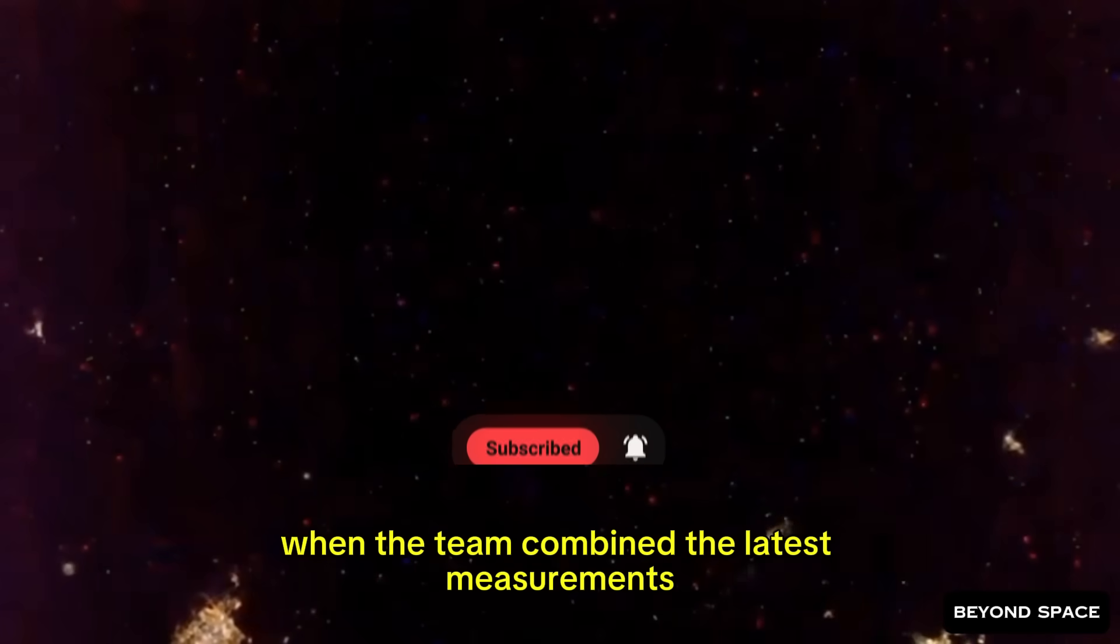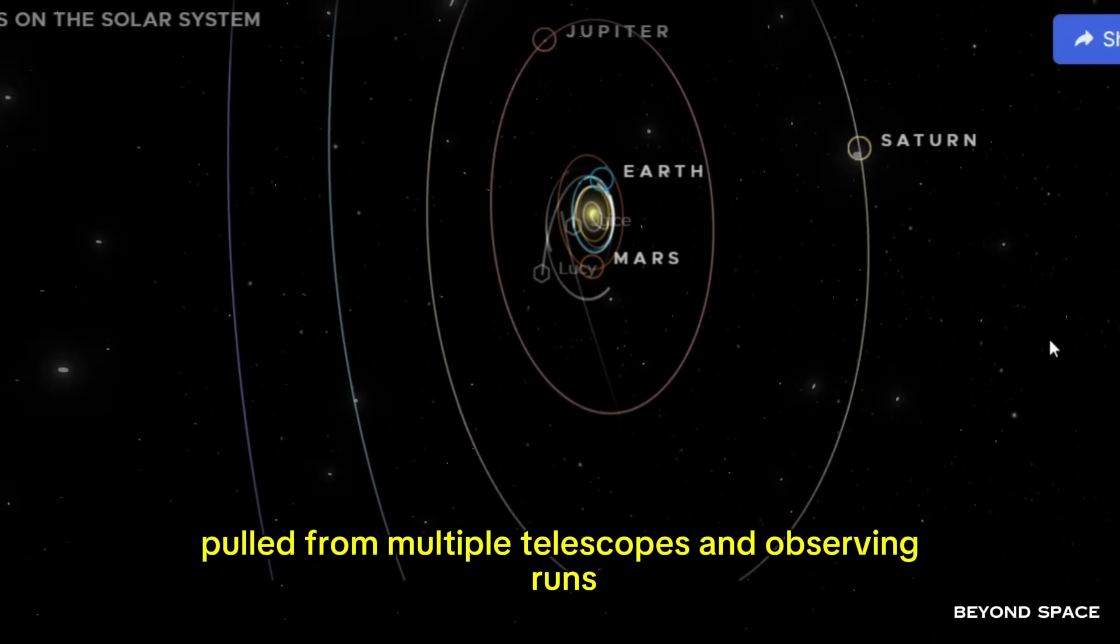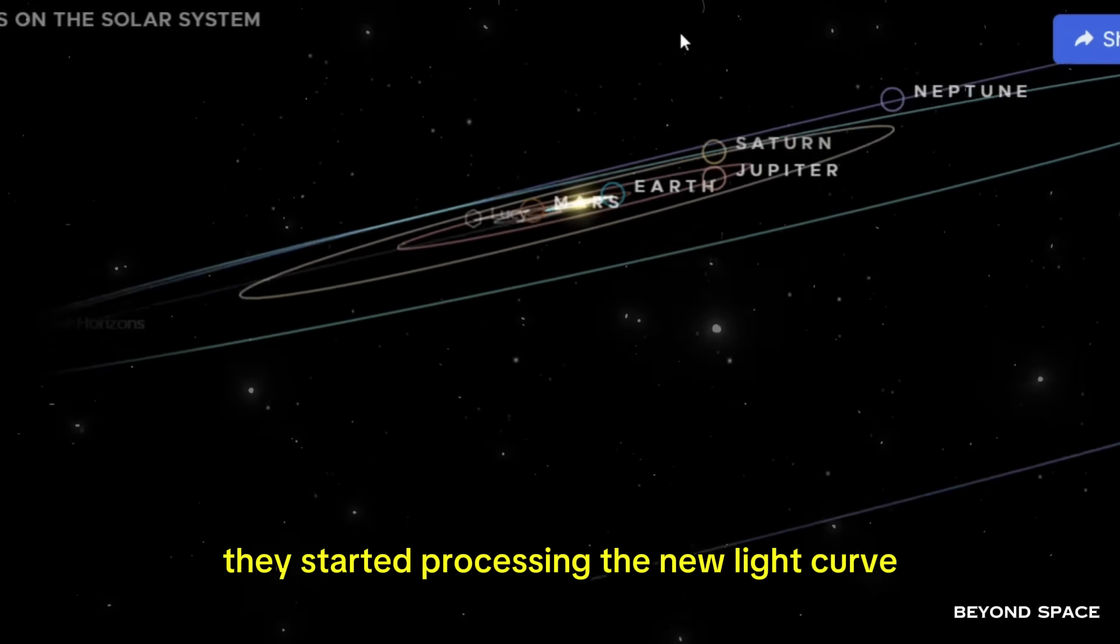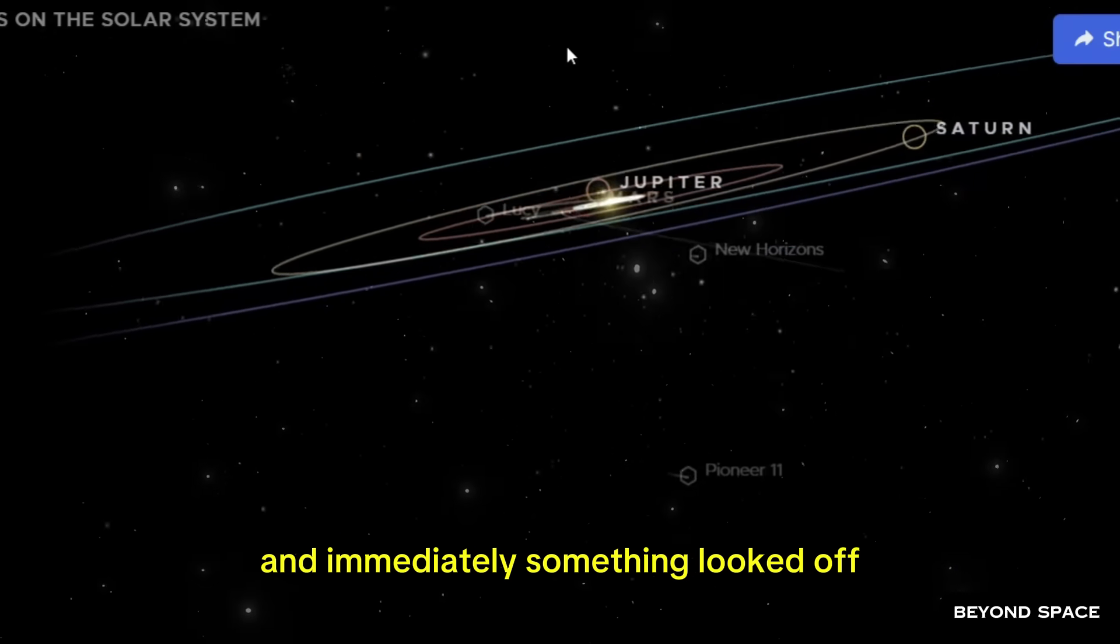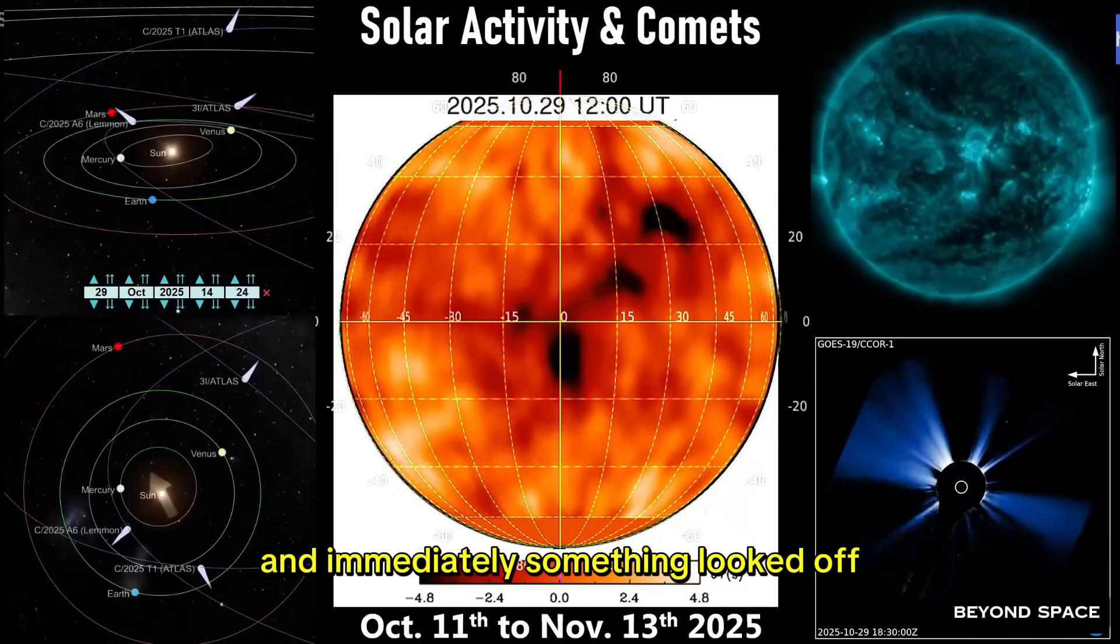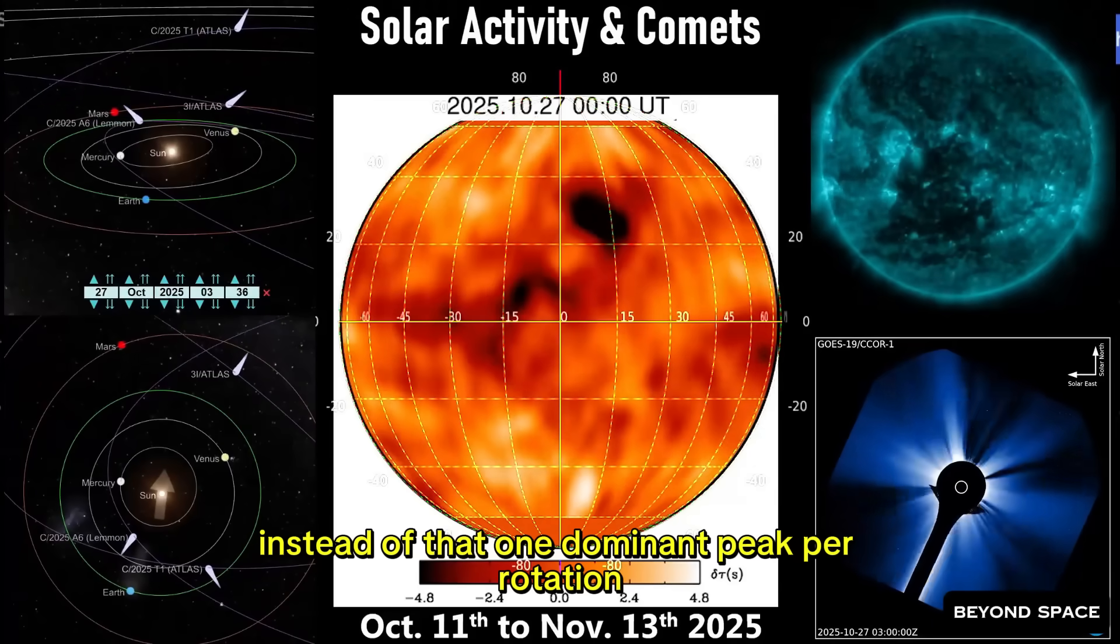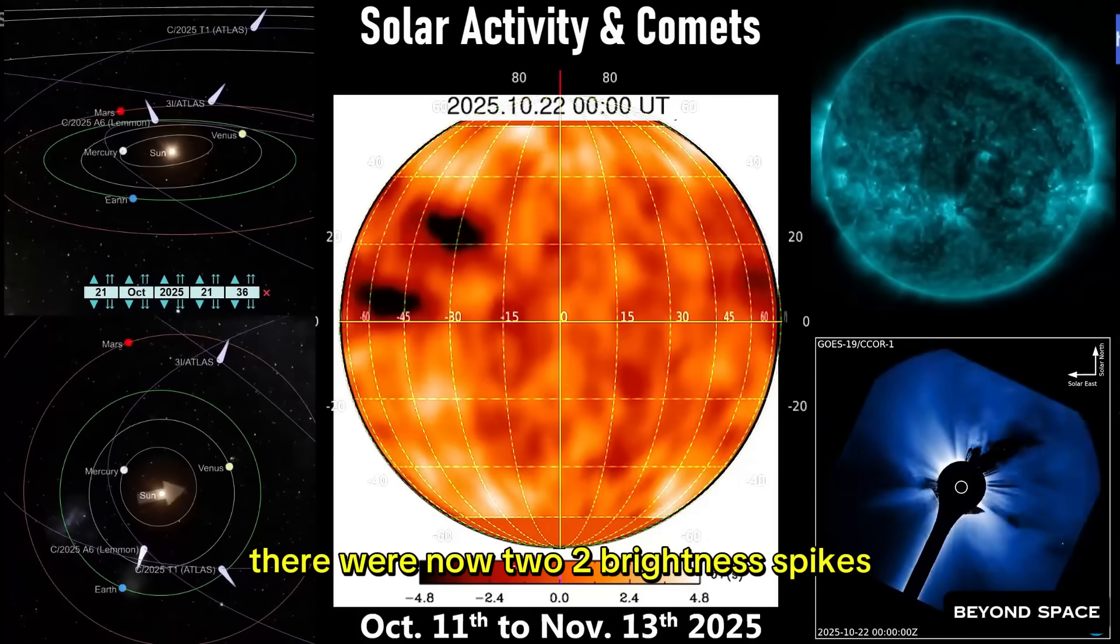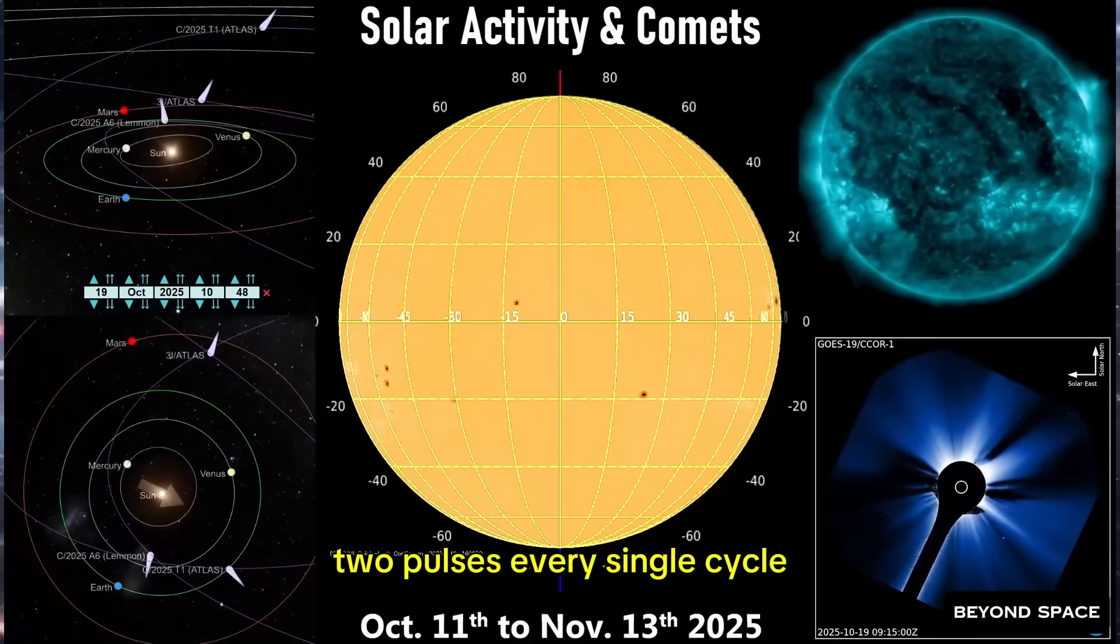When the team combined the latest measurements, pulled from multiple telescopes and observing runs over the past couple of nights, they started processing the new light curve, and immediately something looked off. Instead of that one dominant peak per rotation, there were now two. Two brightness spikes. Two pulses. Every single cycle.